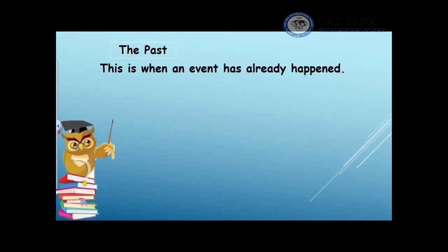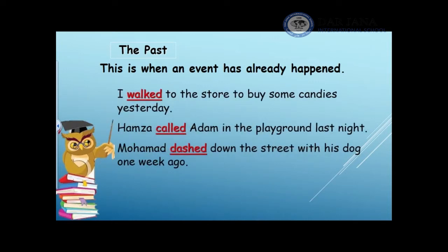Let's start with the past tense. This is when an event has already happened. For example, I walked to the store to buy some candies yesterday. The verb 'walked' is in the past. I add 'ed' to show the past tense. I also have a clue word that shows the past tense, which is 'yesterday.' The word 'yesterday' helps me know that this action happened in the past, so I have to add 'ed' to the verb.